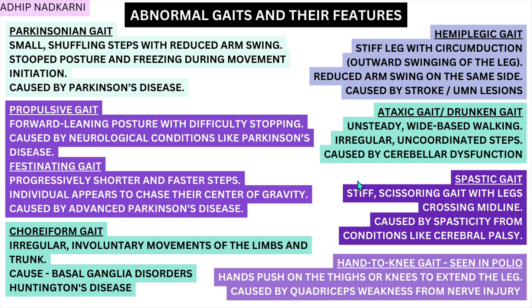Parkinsonian gait has small shuffling steps, reduced arm swing, and stooped posture; advanced stages show propulsive and festinating gait. Choreoform gait has irregular involuntary movements seen in Huntington's disease. Hemiplegic gait has circumduction and reduced arm swing due to upper motor neuron lesions. Ataxic gait is the drunken gait from cerebellar dysfunction affecting coordination and balance. Spastic gait from cerebral palsy causes stiff scissoring. Hand-to-knee gait in polio uses the hands to extend the leg, compensating for quadriceps weakness. That's all for today, thank you for watching.